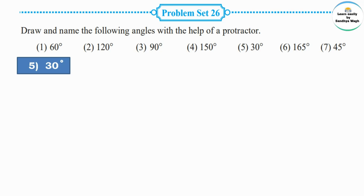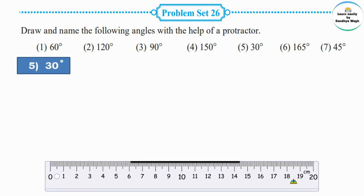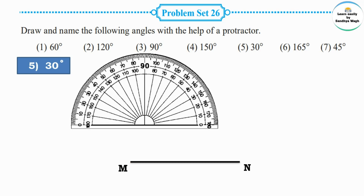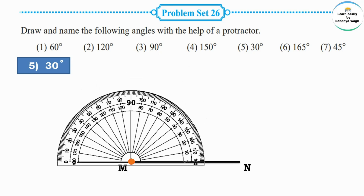The next measurement is 30 degrees. We need to draw a 30 degree angle. First draw the arm and name it MN. We need to draw a 30 degree angle at point M. Place the protractor with its center on point M and start counting from the right side: 0 degrees, 10 degrees, 20 degrees, and 30 degrees. Mark a point at 30 degrees.